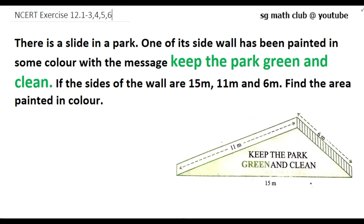In today's video we will do some problems based on Heron's formula. The first question: there is a slide in a park, one of its side walls has been painted with the message 'Keep the park green and clean.' If the sides of the wall are 15 meters, 11 meters, and 6 meters, find the area painted in color. So here we have a scalene triangle with three different sides.